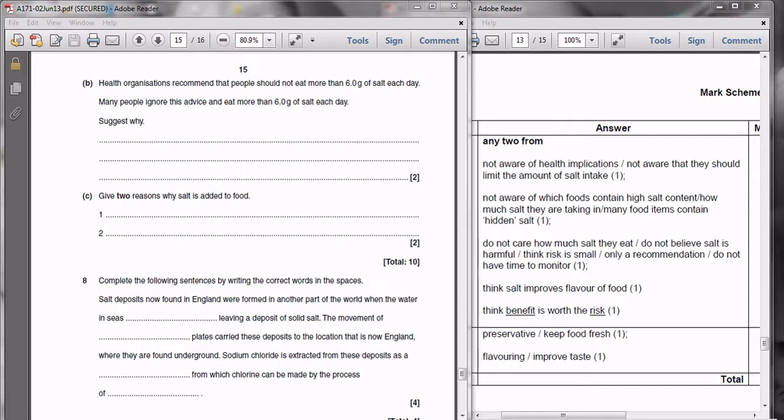You might go down the route of saying that they think that the salt improves the flavour of the food. So that might be a reason why they add additional salt to their food. And finally, you could put something about a benefit being more than the risk. Any of the benefits, including the flavouring, is worth more than the risk. So any of those will get you a mark as well.